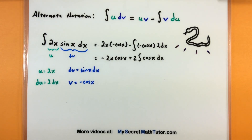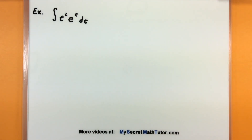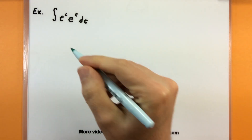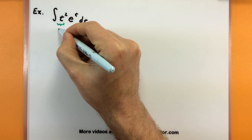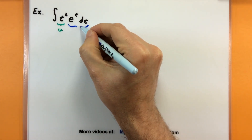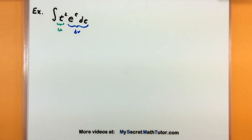Let's move on to examples. For the first example, I have the integral of t squared multiplied by e to the t. We're looking for a piece where it's fairly good to take the derivative, another piece where we can take the antiderivative, and we also want this to get simpler as we go along. A good choice for u is t squared, because its derivative is 2t. And e to the t dt looks like a great choice for dv, because the antiderivative of e to the t is just another e to the t.